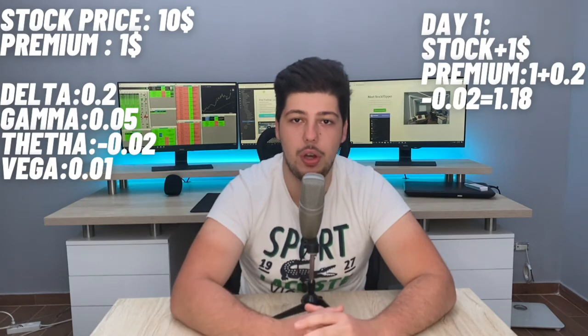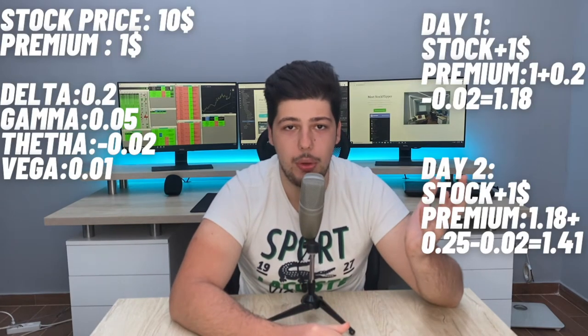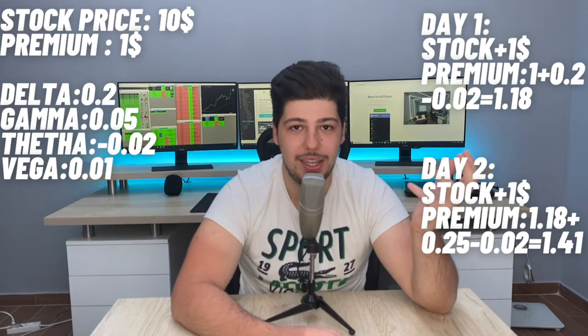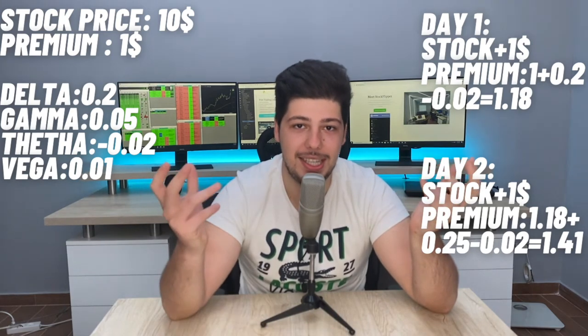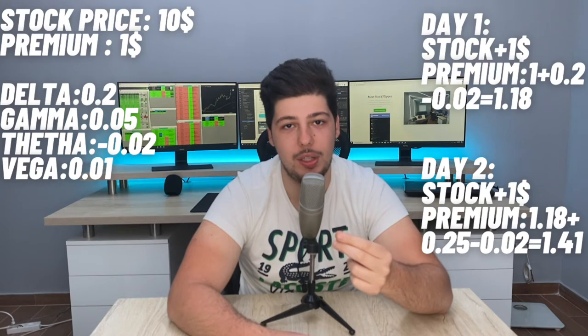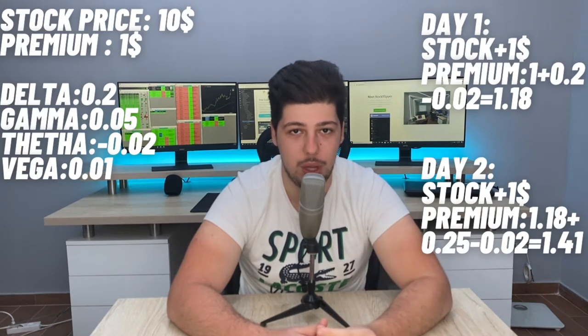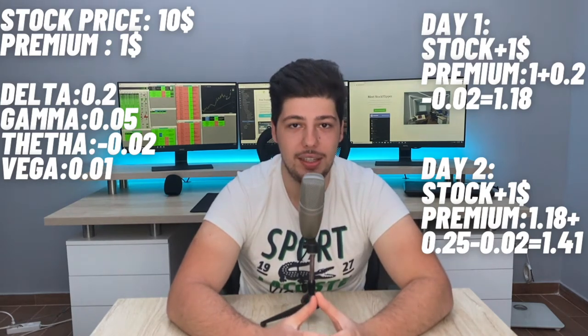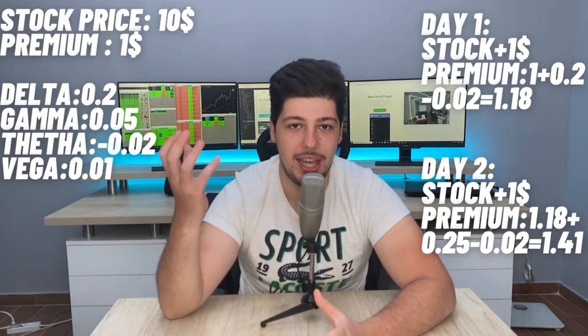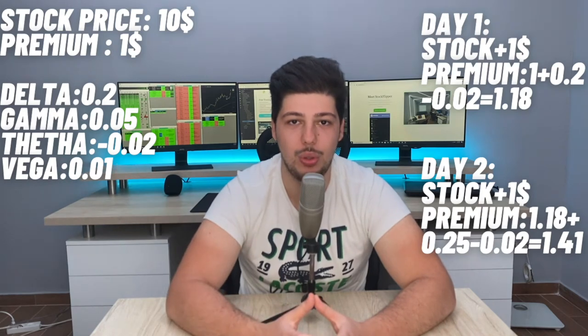On the second day, the stock went up again by $1. The premium is currently $1.18. The new delta value is delta plus gamma: 0.2 plus 0.05 equals 0.25. We add $0.25 to $1.18, then decrease by theta of 0.02, leaving us with $1.41. The stock went from $10 to $12 — a 20% return — but in the option price, you can see it's leveraged at 40% return.